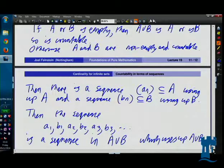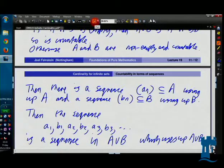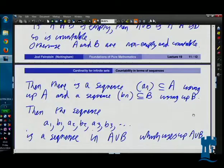Because anything that's in the union is either in A or in B. If it's in A, then it's one of the a's, and it turns up in one of the odd terms. And if it's in B, then it's one of these b's in the sequence, and it turns up in one of the even terms. So there you are. And that proves the theorem. So A union B is countable.